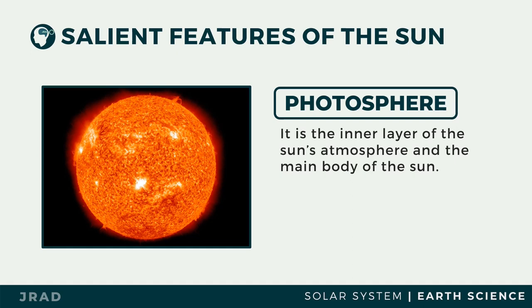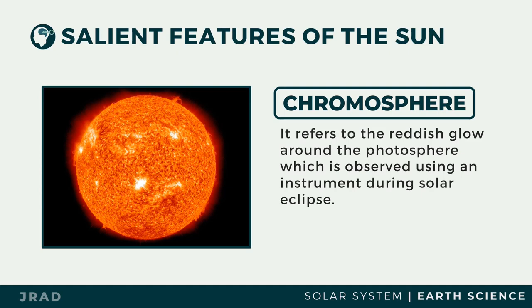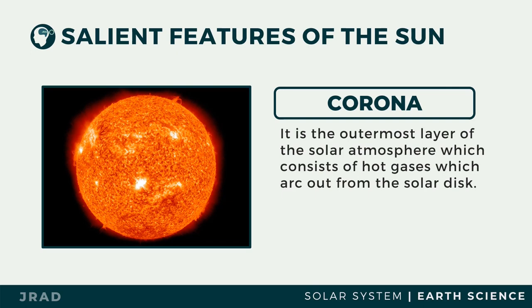The solar atmosphere consists of the photosphere, which is the inner layer and the main body of the Sun. It is responsible for the bright surface of the Sun. The chromosphere refers to the reddish glow around the photosphere, which can be observed during a solar eclipse.